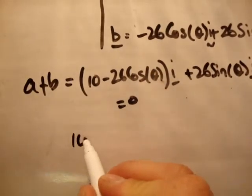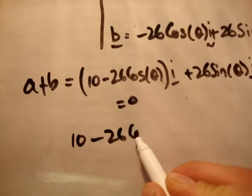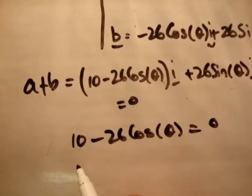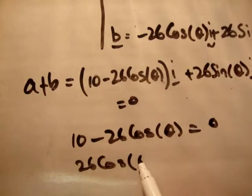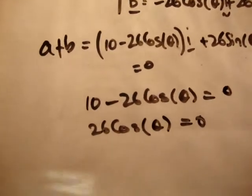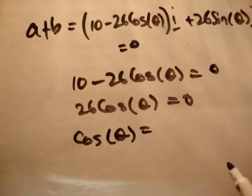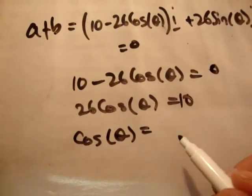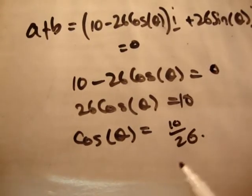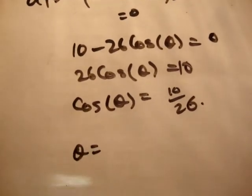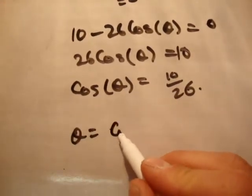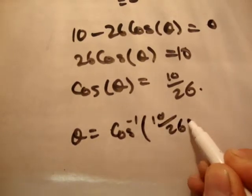So therefore, 10 minus 26 cos theta is equal to 0. 26 cos theta is equal to 10. Cosine theta is equal to, that's 10 not 0, 10 over 26. Therefore theta is equal to the inverse cosine of 10 over 26.